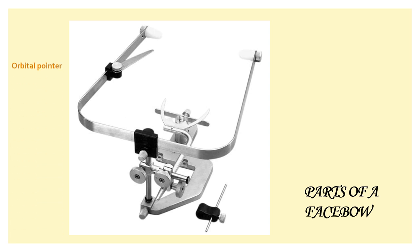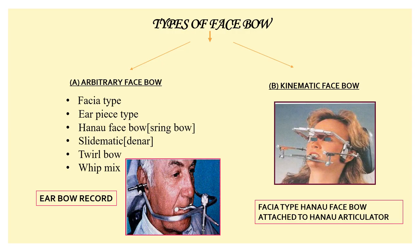Looking at the parts of the face bow: first is your orbital pointer, then the U-shaped frame, then the locking clamp. Once you have placed the U-shaped frame and the ear plugs into the patient's ears, and the orbital pointer coincides with the third point of reference — that is the inferior margin of your orbit — you use the locking clamp to tighten it and establish the occlusal plane of the patient. You can also see the bifork and the condylar rods.